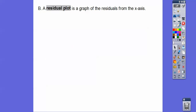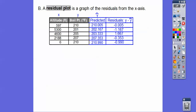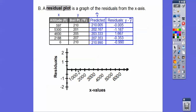A residual plot is a graph of the residuals from the x-axis. Here are our residuals — we're going to plot these on the x-axis. It's going to have a different graph, with the same x-axis as our original scatter plot, but the y-axis is going to reflect these residuals. These residuals go from basically zero to either over one or up to almost 1.7. So when we start plotting all these points, the first one is at 597, negative 0.005.